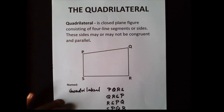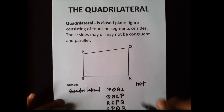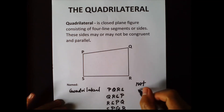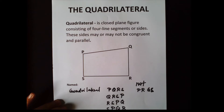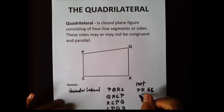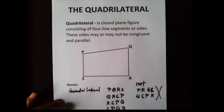That is how you name a quadrilateral. Not like this — PRQS or QSPR — which is wrong. That is the wrong way of naming a quadrilateral because the letters are not consecutive.